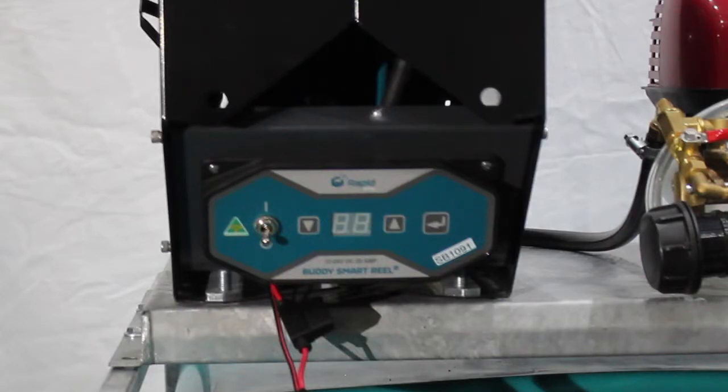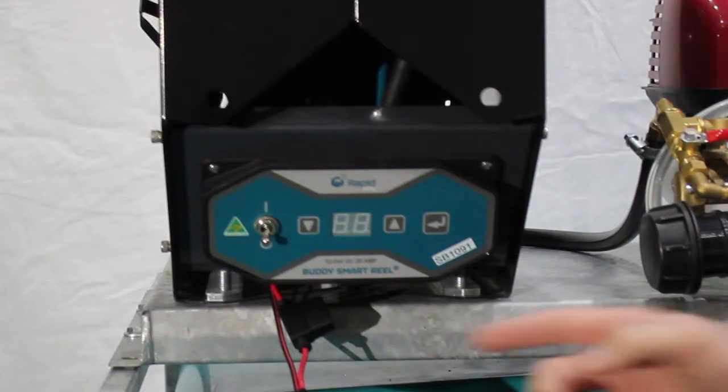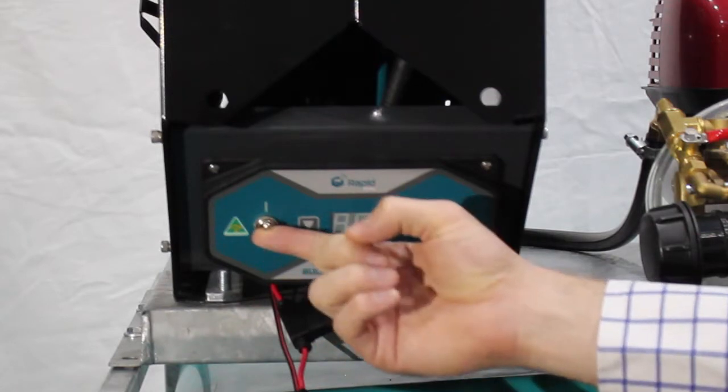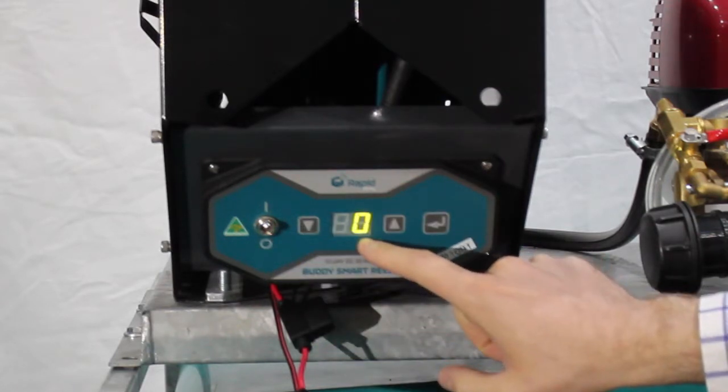Welcome to our how-to tutorial on how to pair a buddy wheel remote. First, turn your buddy wheel on and make sure that it goes into standby mode.